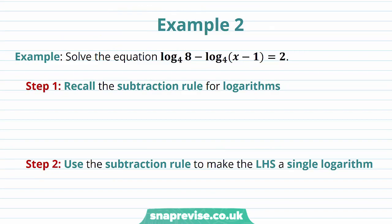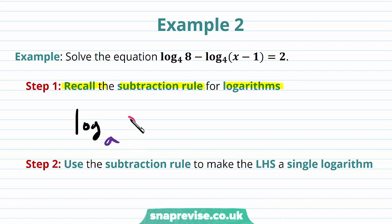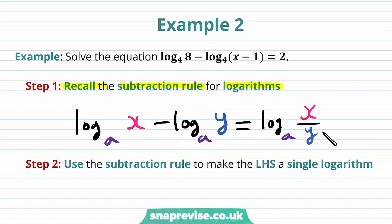Our second example asks us to solve the equation log base 4 of 8 minus log base 4 of x minus 1 is equal to 2. Our first step is to record the subtraction rule for logarithms. Namely, the log base a of x minus the log base a of y is equal to the log base a of x over y. Our second step is to use the subtraction rule to make the left hand side a single logarithm.